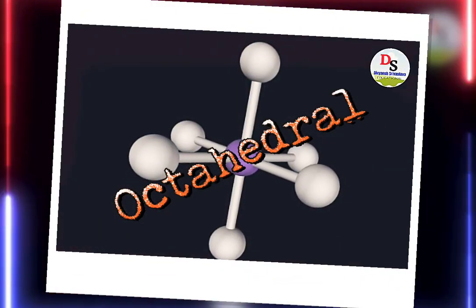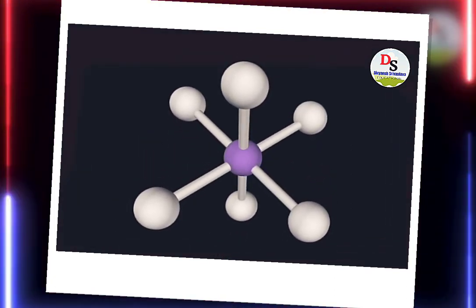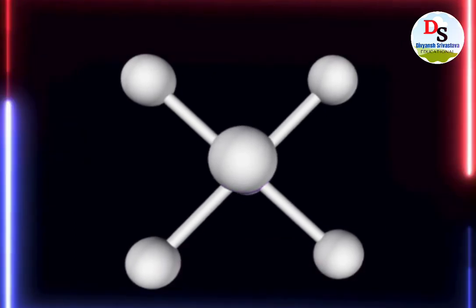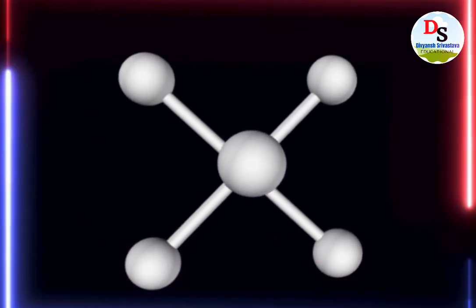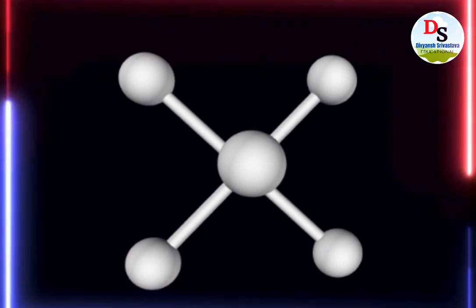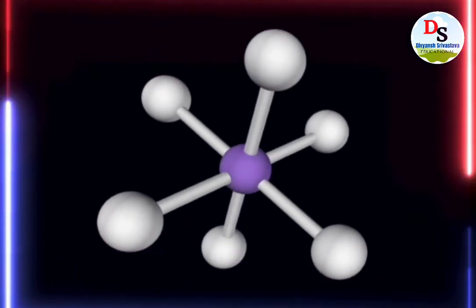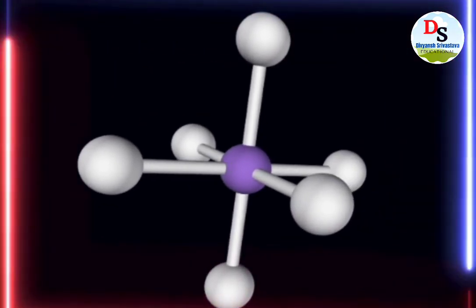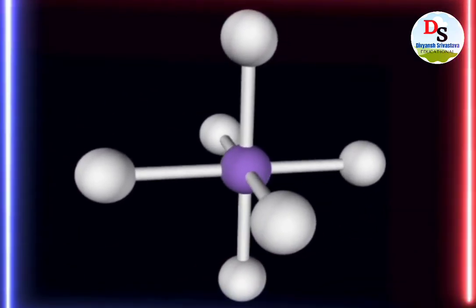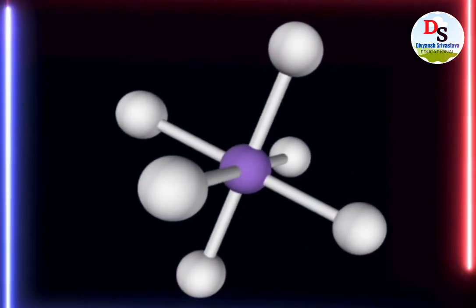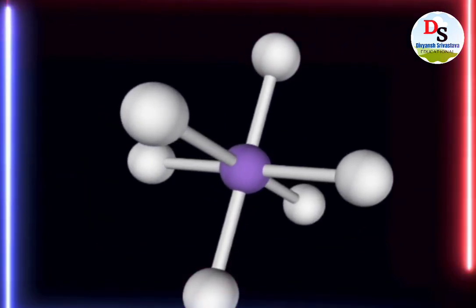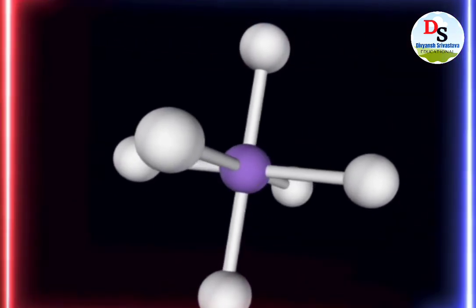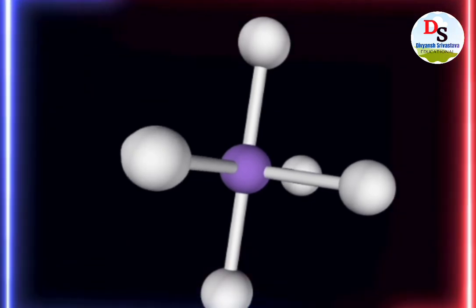It is the octahedral structure of a molecule. It has 6 bond pairs and 0 lone pairs.